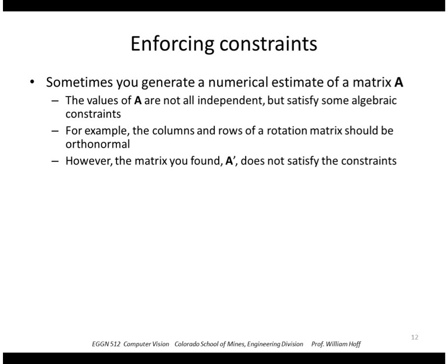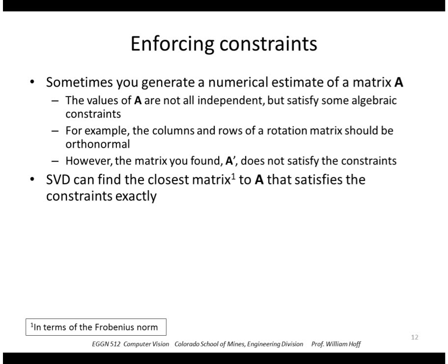So SVD can be used to find the closest matrix, in terms of the Frobenius norm, that satisfies the constraints exactly. So the procedure is, we'll do the following: we'll take the SVD of A, so we'll get a U, D, V transpose.